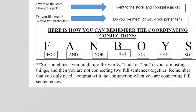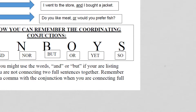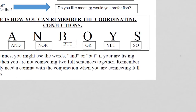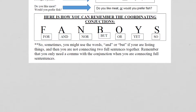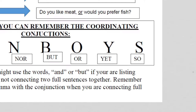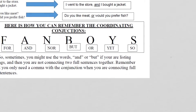Third example: 'I went to the store' and 'I bought a jacket' become 'I went to the store, and I bought a jacket.' Last example: 'Do you like meat?' and 'Would you prefer fish?' — when we combine two questions, we only need one question mark at the end: 'Do you like meat, or would you prefer fish?' We've used the coordinating conjunction 'or.'